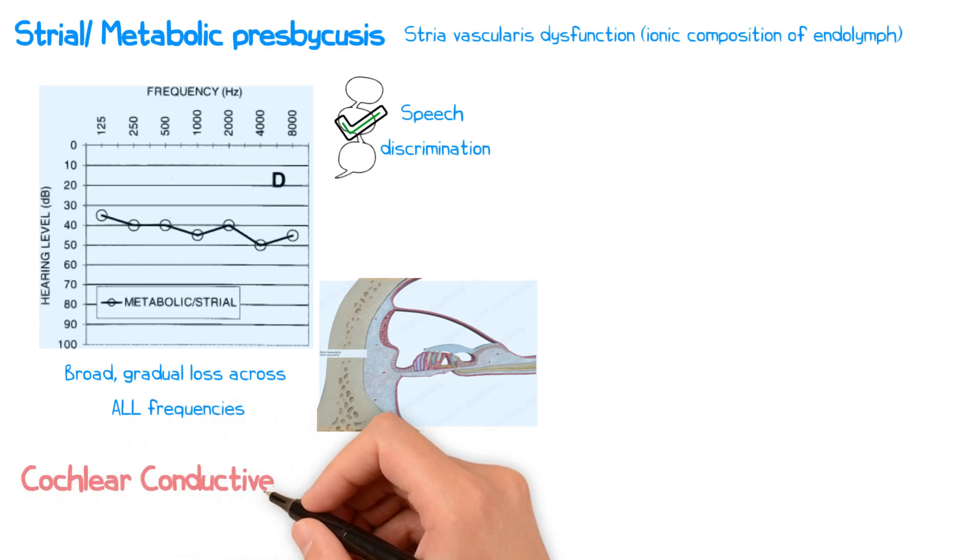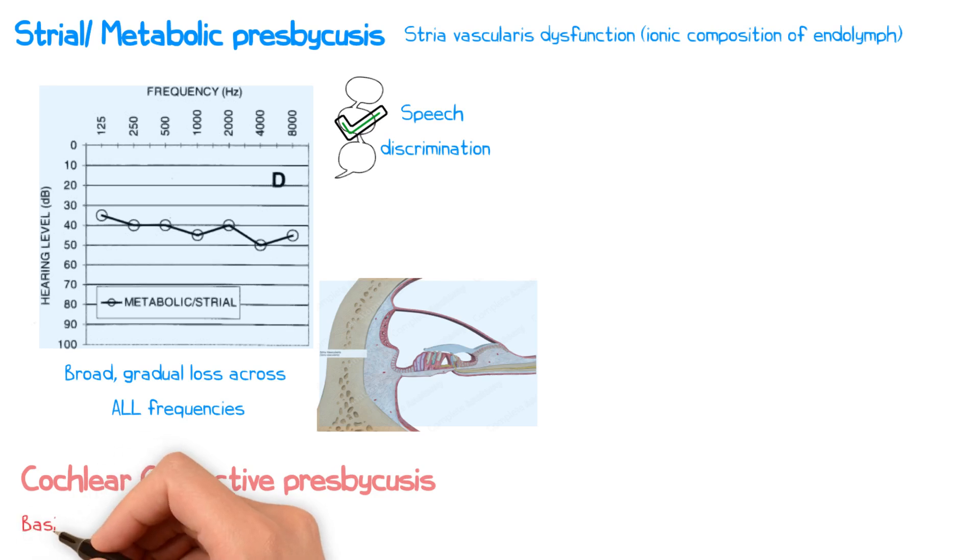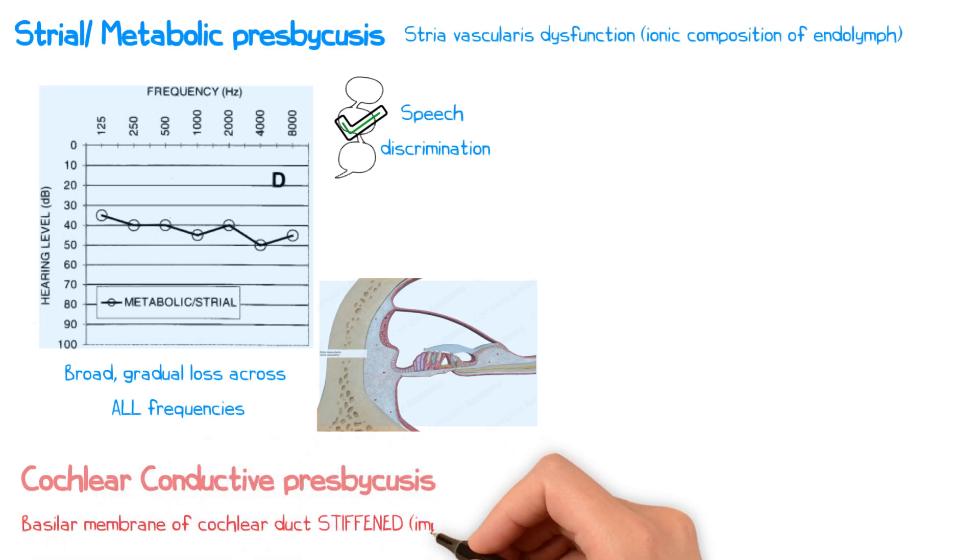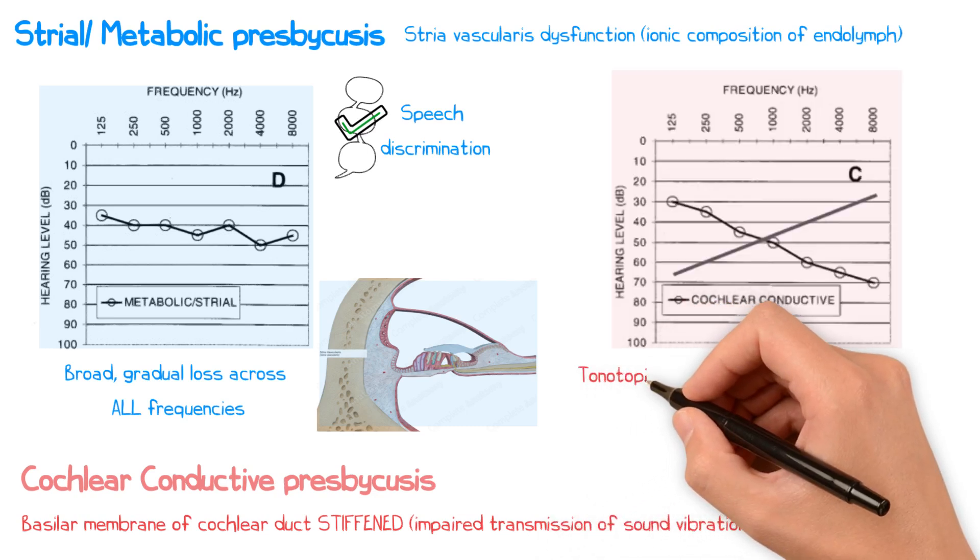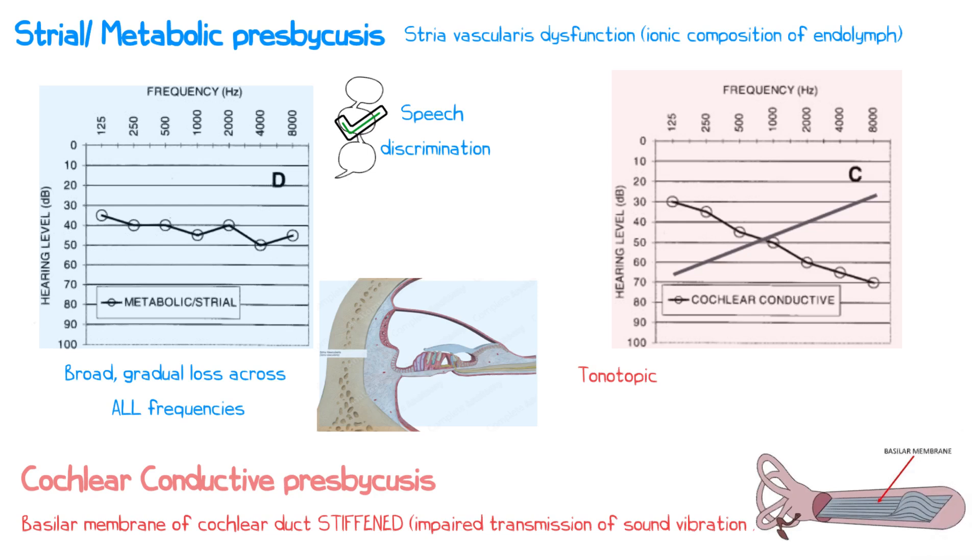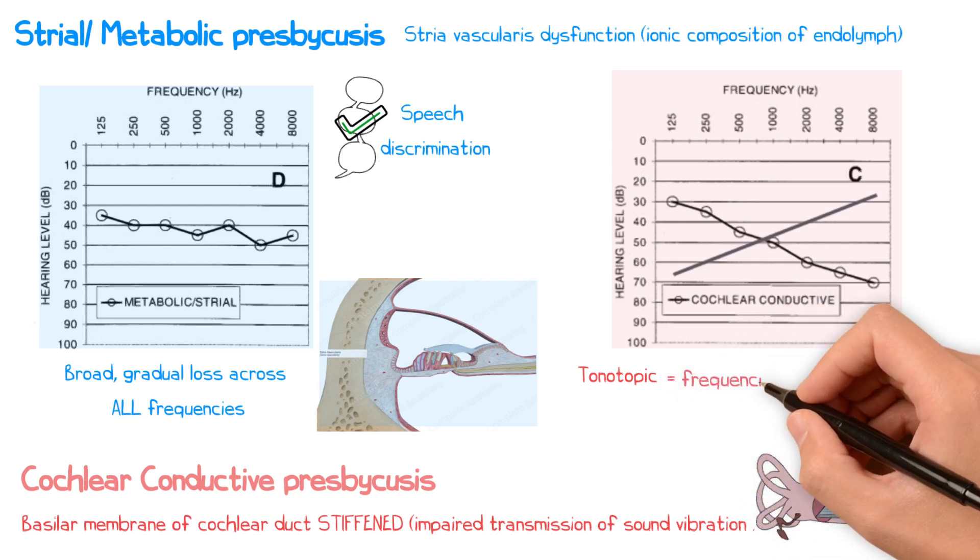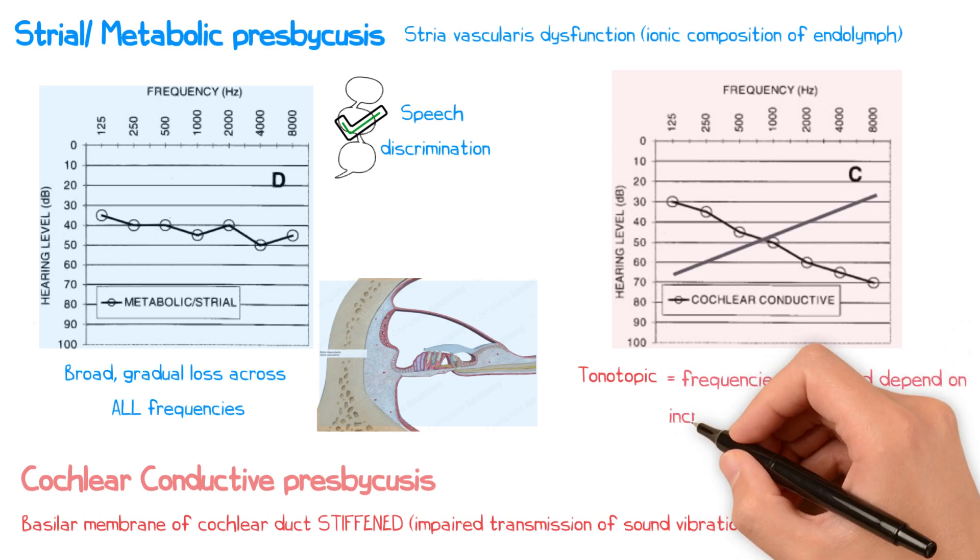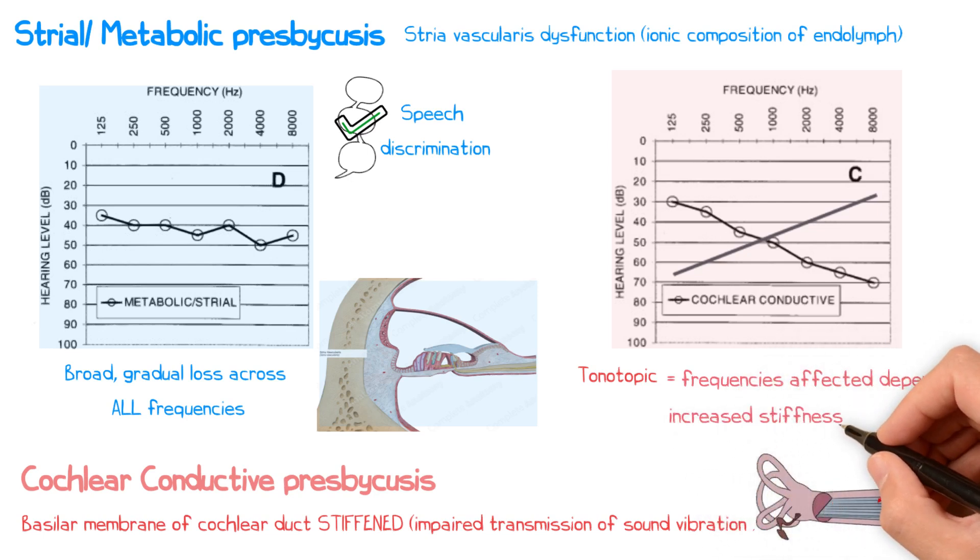Finally, with cochlear conductive presbyacusis, the physical properties of the cochlear duct's basilar membrane become stiffer with age, reducing the ability of the cochlea to transmit sound vibrations effectively. The tonotopic arrangement of the cochlea is achieved by the basilar membrane having different stiffness throughout. As such, depending upon whether the basilar membrane becomes stiffer or floppier due to age-related changes, certain frequencies will be affected more than others.